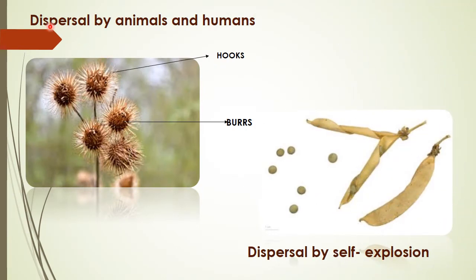Next is dispersal by animals and humans. Humans and animals eat fruits and throw the seeds away, so those seeds grow into new plants. Some plants produce burrs that have hooks at the end of thorns — these burrs stick to animal fur and are scattered as the animal moves from place to place. Some seeds, such as cherry, are passed out undigested in the droppings of birds.